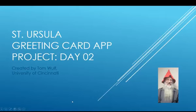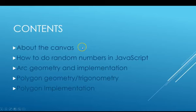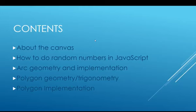I hope you're enjoying our project and we're going to go ahead and do day two now. I'm going to go through some things first and then take you through continuing with the application. We're going to talk about the HTML5 canvas, how we do random numbers in JavaScript, a little bit about the arc geometry and how we implement the arc to draw circles, a bit more about polygon geometry and trigonometry, and then we'll go on and add these elements to the code.